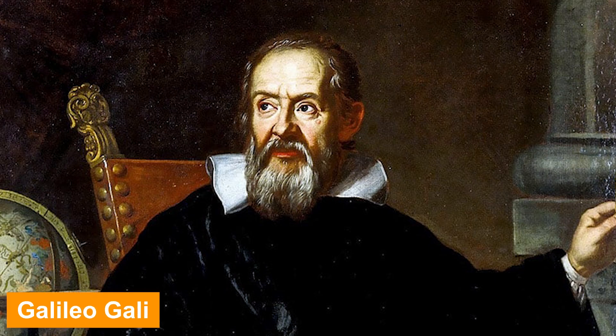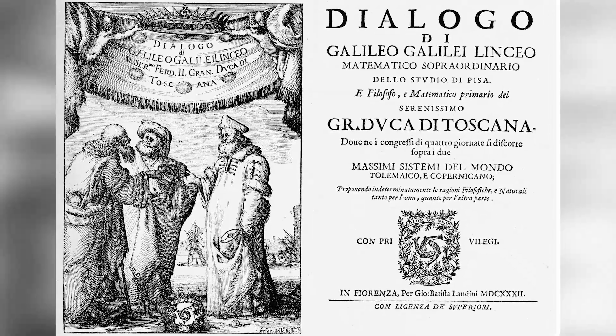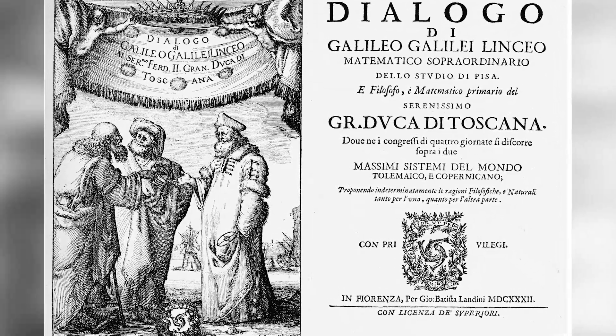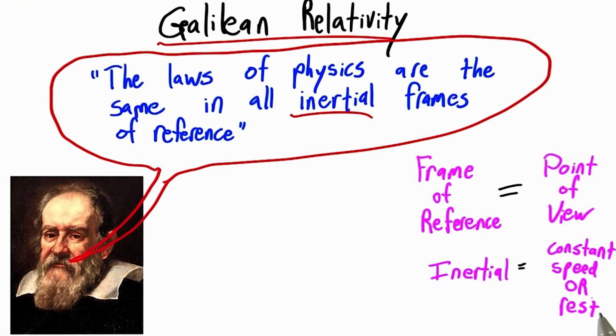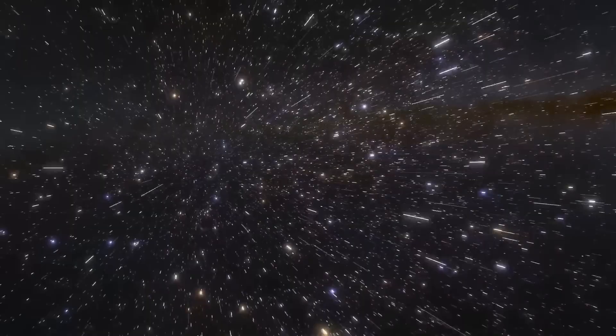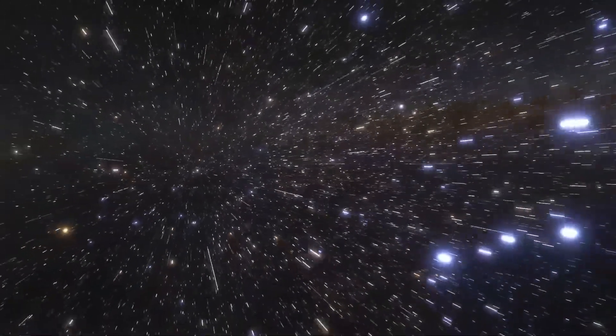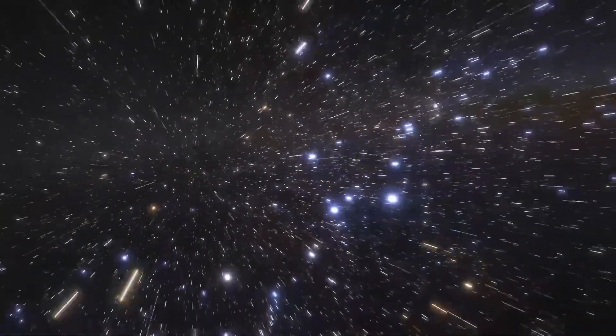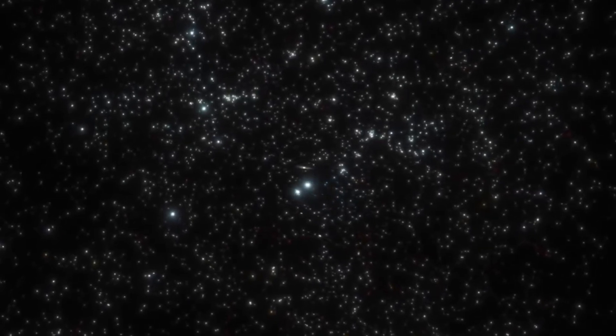This concept, first articulated by Galileo Galilei in his 1632 book The Dialogue Concerning the Two Chief World Systems, illustrates what we now term Galilean relativity, or invariance, implying no absolute reference frame for motion. Each frame of reference is valid, and the most applicable one depends on the situation.